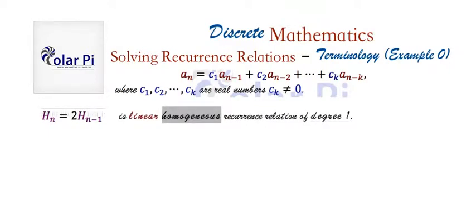A very similar looking one but slightly different - this here is still linear, still homogeneous, but it's of degree five. Here, this five, the value of k, is what tells you the degree of the recurrence relation.